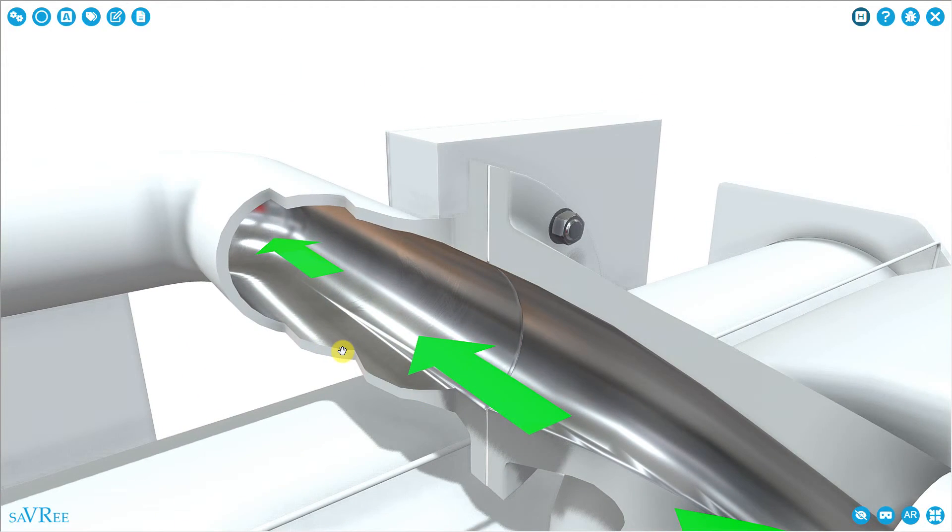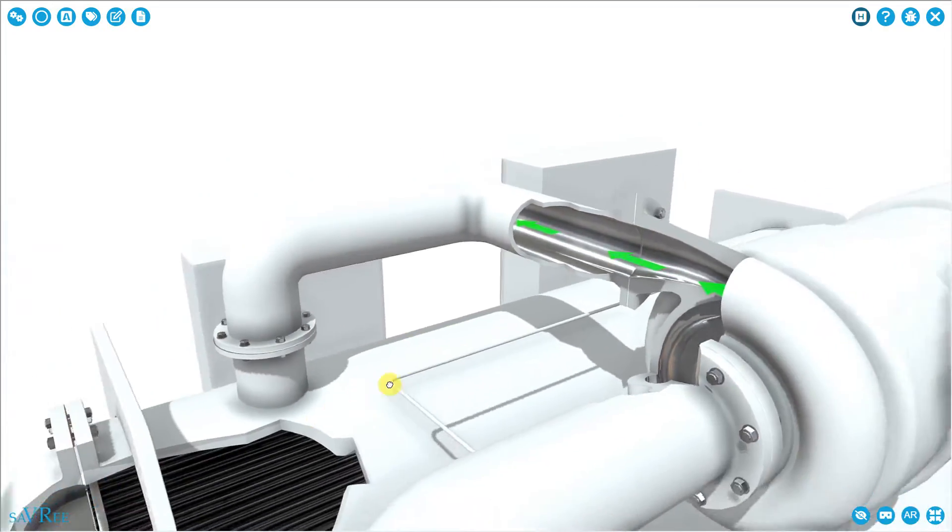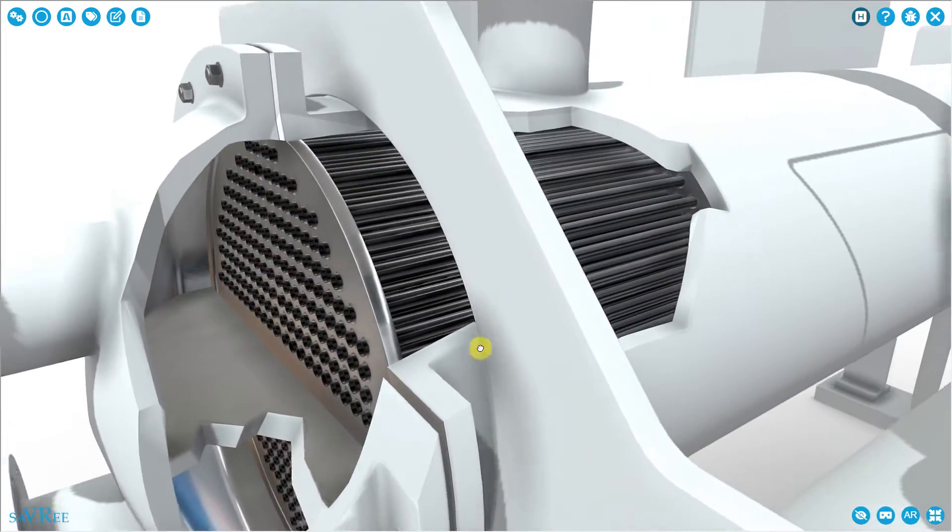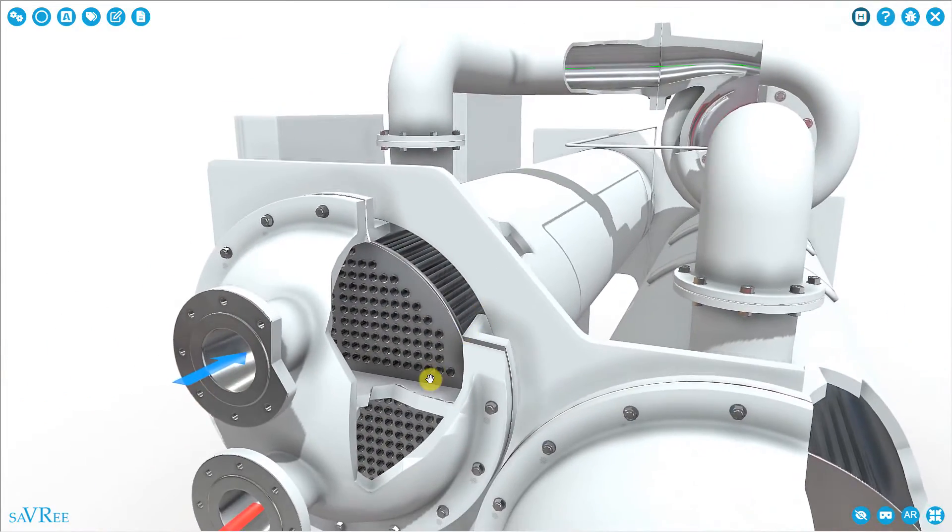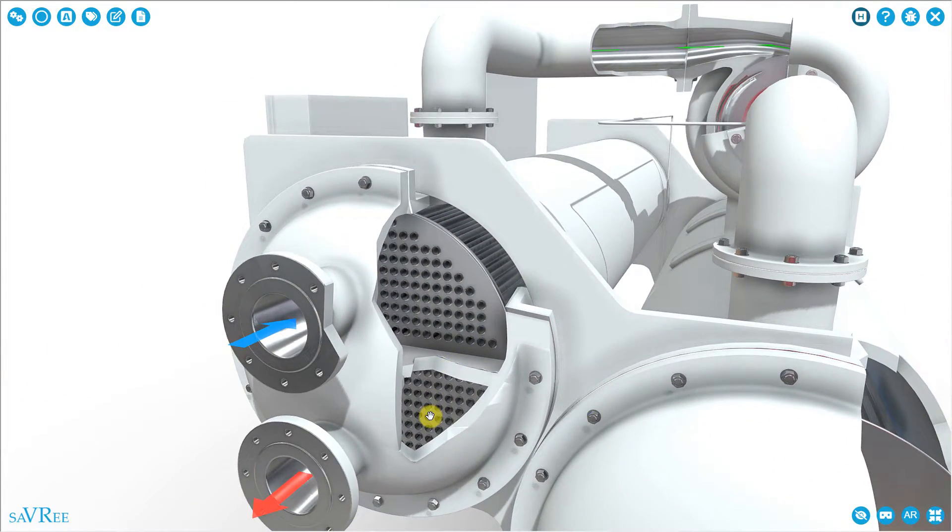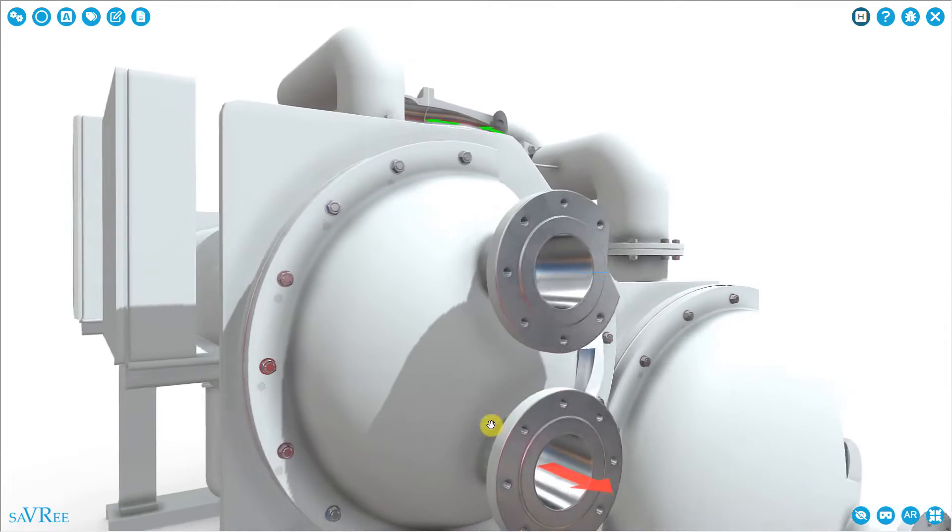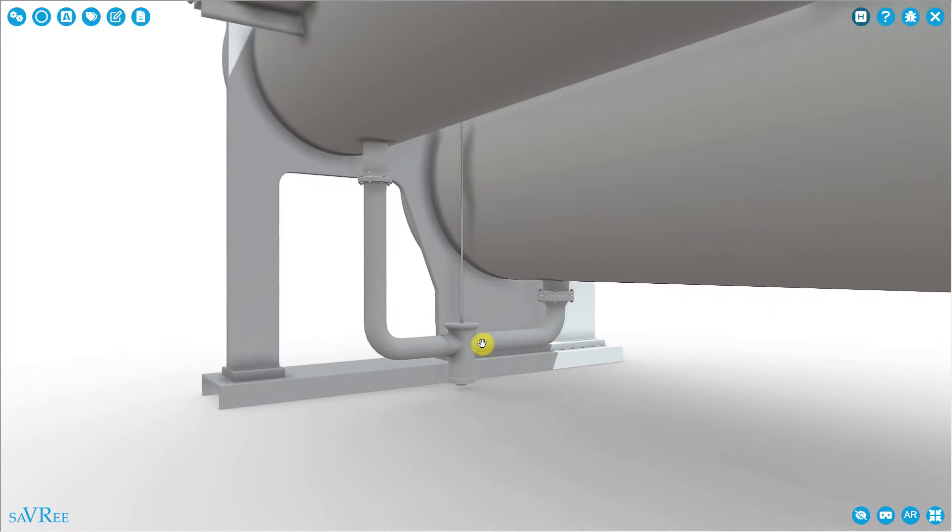We discharge the refrigerant from the compressor. It goes into a shell and tube heat exchanger. And this shell and tube heat exchanger forms our condenser because we condense the refrigerant from a vapor and turn it into a liquid. From there, the liquid refrigerant comes out.